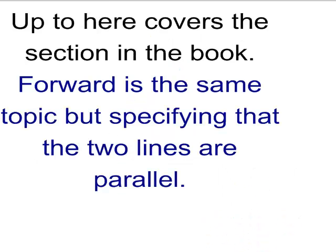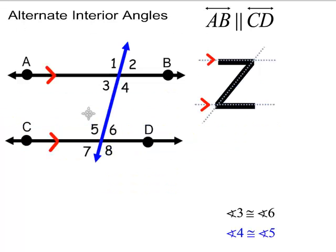We've covered what we need for this section. Now, assuming AB is parallel to CD, we'll learn properties about all these angle pairs. The alternate interior angles — the inside of the Z — are congruent angles. So angles 3 and 6 are congruent, and likewise angles 4 and 5 are alternate interior angles and congruent as well, if AB is parallel to CD.